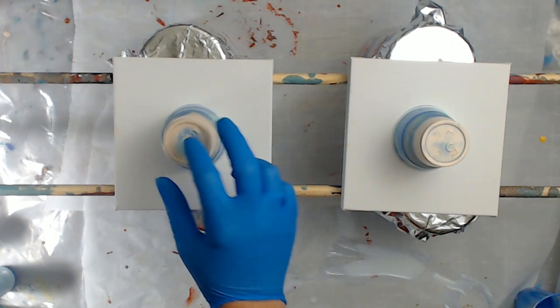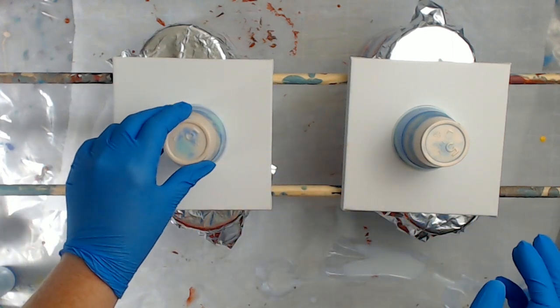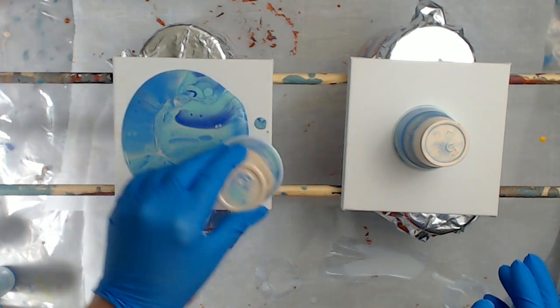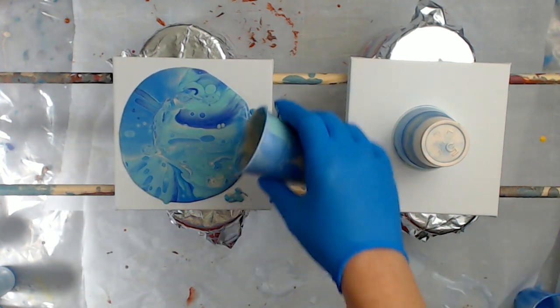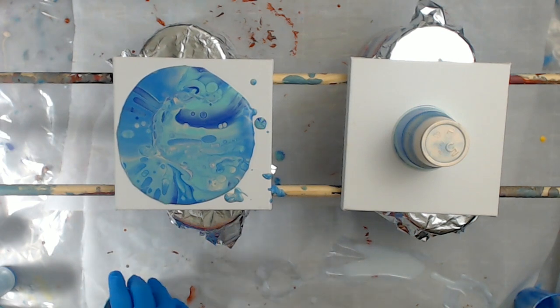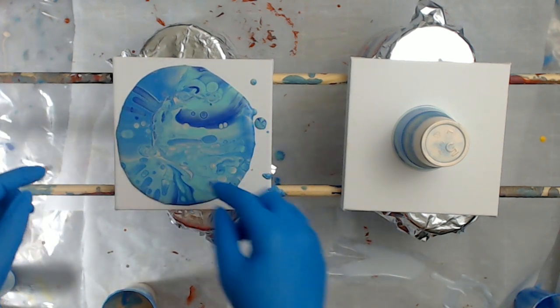It's been a couple of minutes. I've changed gloves because the pouring medium is so sticky. We'll start with the Martha Stewart marbling medium. I'm just going to lift the cup. Oh, very nice cells right away.